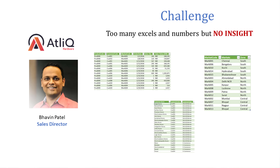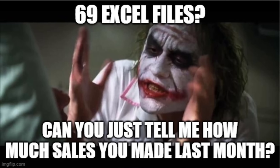As a sales director, Bhavin has no idea what is actually happening at the ground level — he doesn't have data insights. When he calls regional managers, they give him big Excel files, and as humans we're not good at consuming so many numbers. He's frustrated because managers are giving him so many Excel files — he says: why are you giving me 69 Excel files? He has to merge those files and get insights himself, which is very tedious.